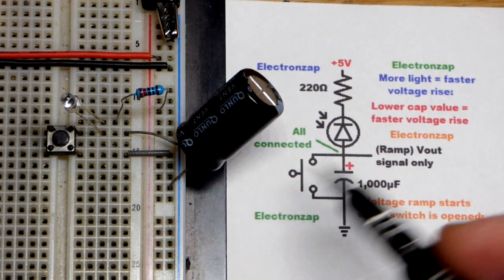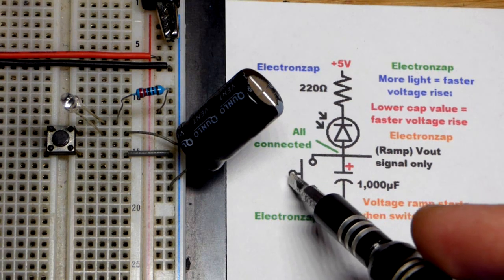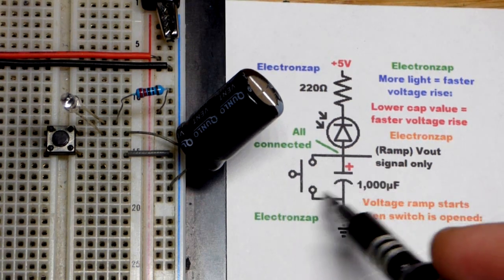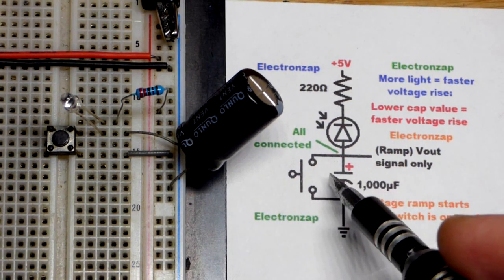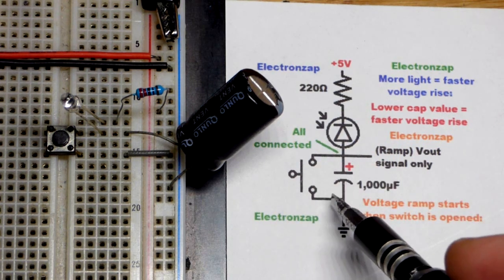There you can see that better right there. So they are basically in series when the switch is open. When we close the switch we put that parallel with the capacitor and any current goes through there goes directly to ground. And the capacitor instantly discharges.